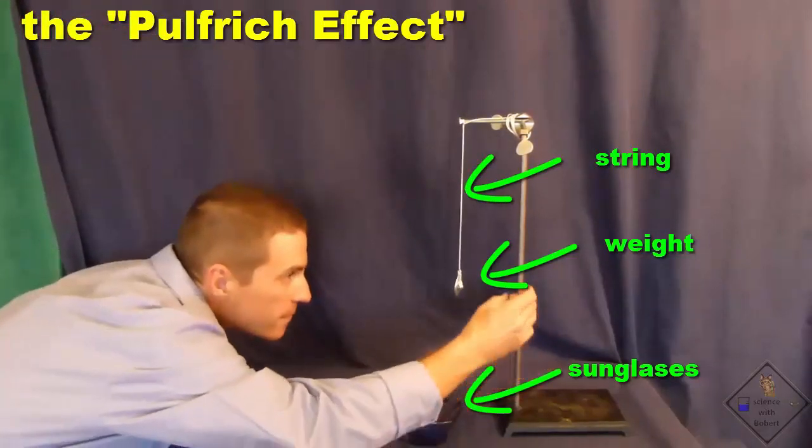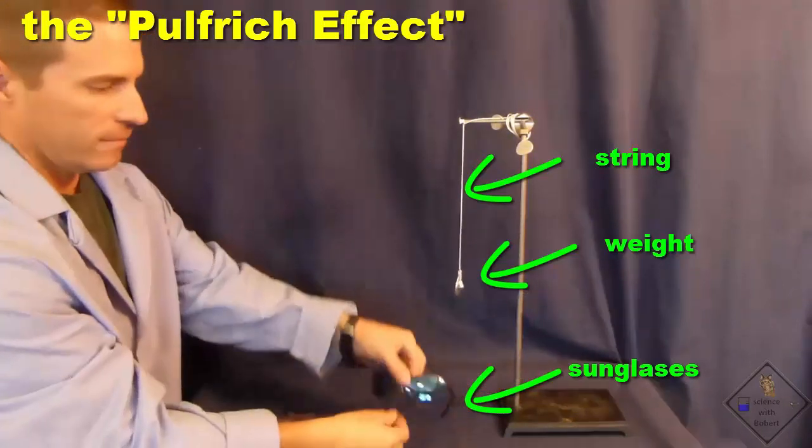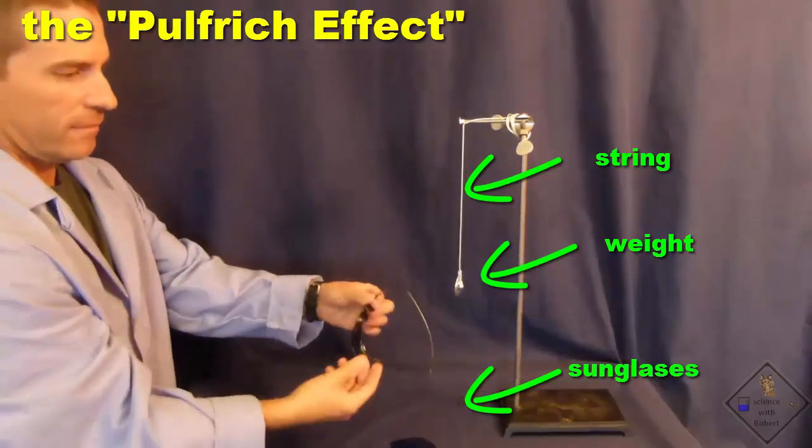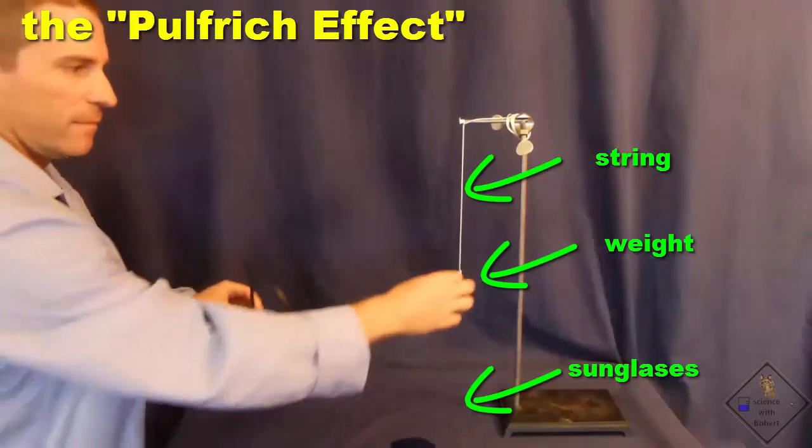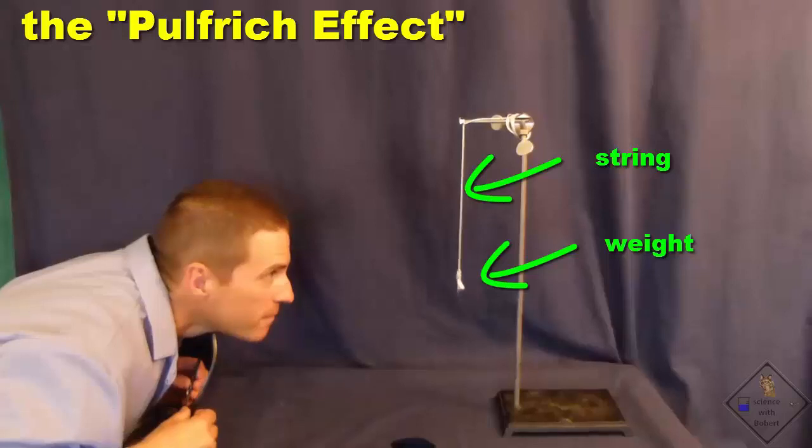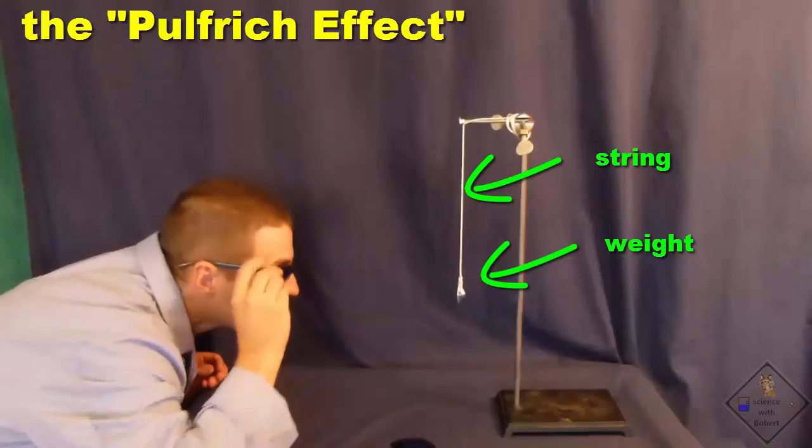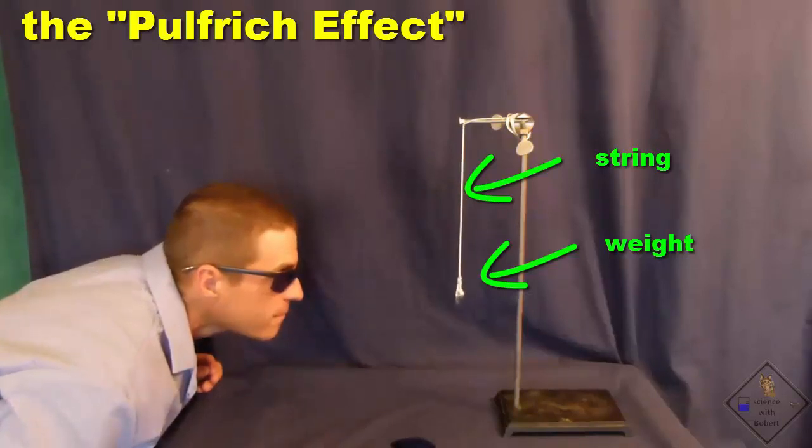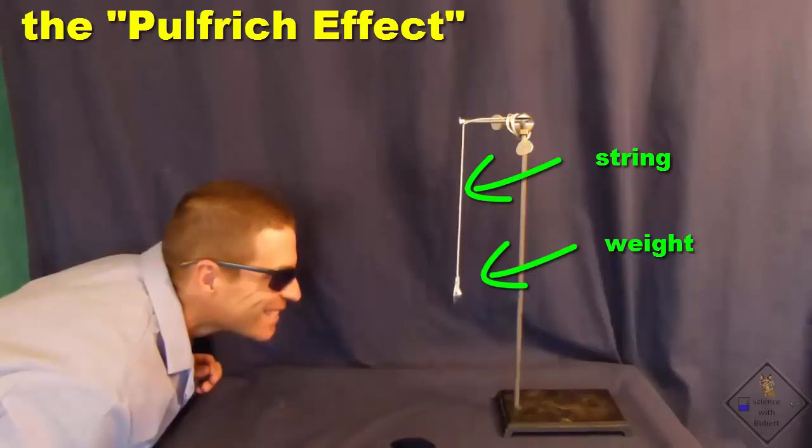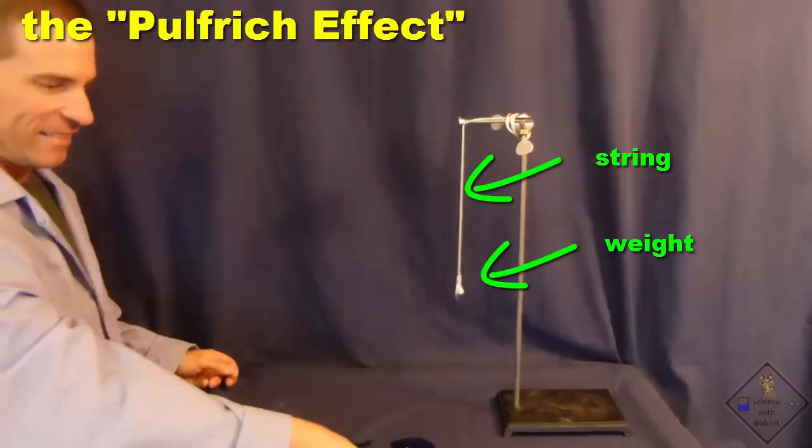Hang a weight on an end of a string and swing the weight like a pendulum. For the strongest effect, swing the pendulum only lightly and keep looking straight ahead. Do not have your eyes follow the pendulum. The pendulum should look like it is traveling a straight path back and forth. Now, dim the view through only one of your eyes. Dr. Smith is using a pair of sunglasses with one of the shades removed. Be sure to keep looking straight ahead and you will now see the path of the pendulum become circular. Crazy!